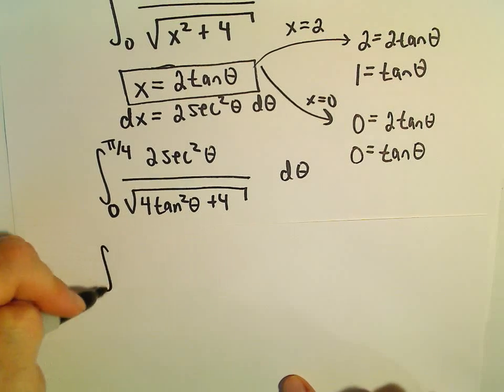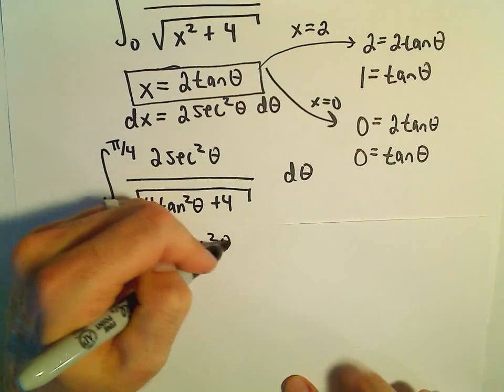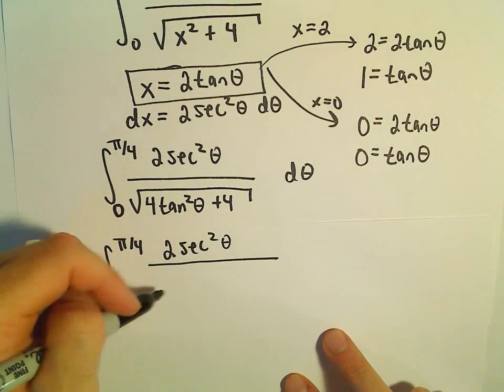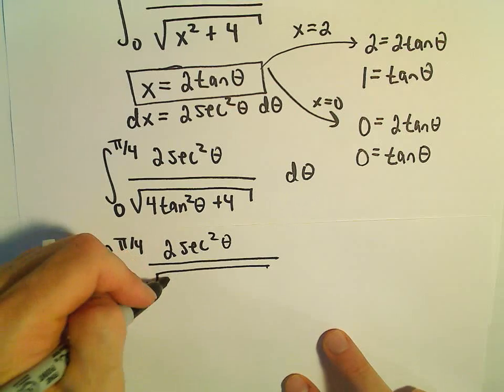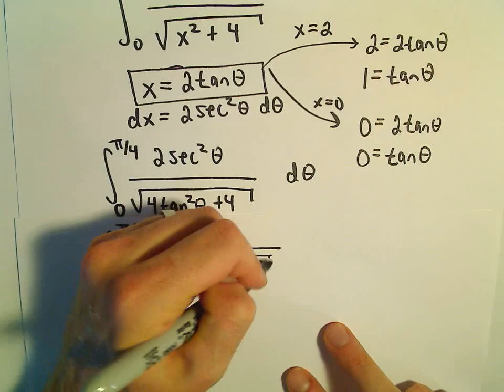We now have the integral from 0 to π/4 of 2sec²(θ) over the square root of 4(tan²(θ) + 1).